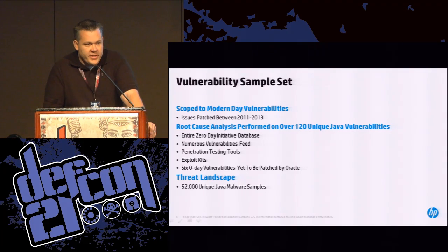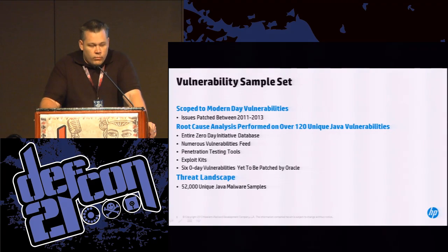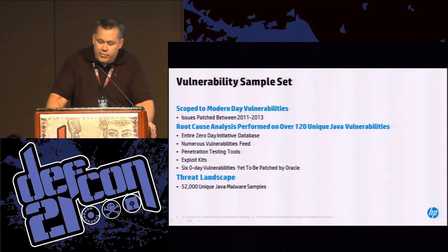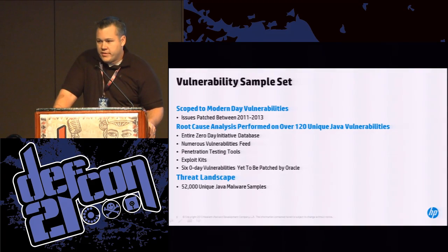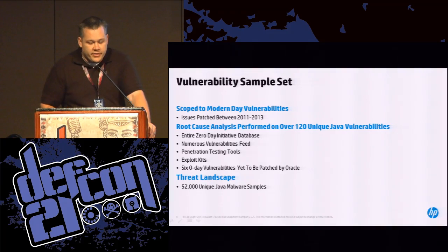So this is actually trending for next year's patches too. When we looked at the threat landscape, we worked with Reversing Labs and they provided us a sample set of 52,000 Java malware samples so we could understand what's actually being used out there today.